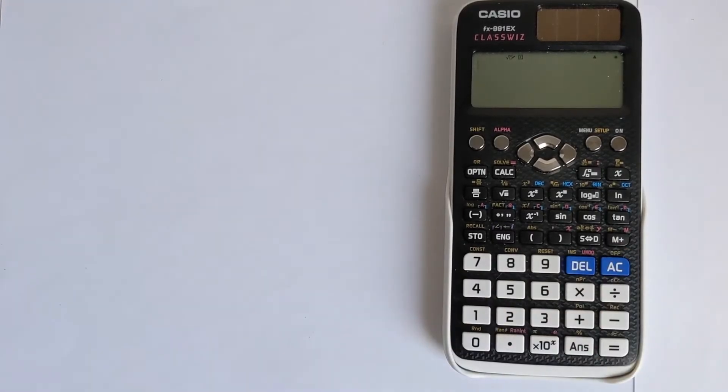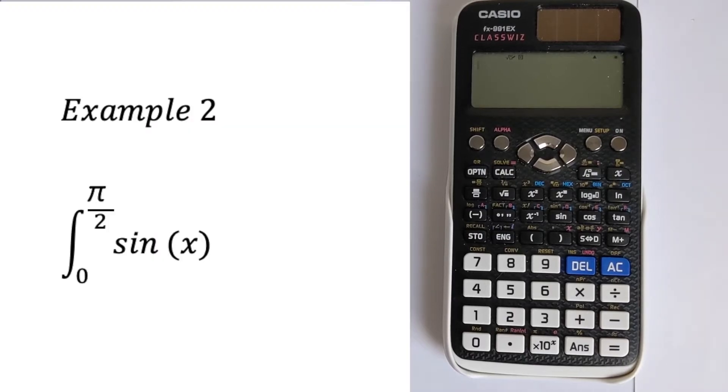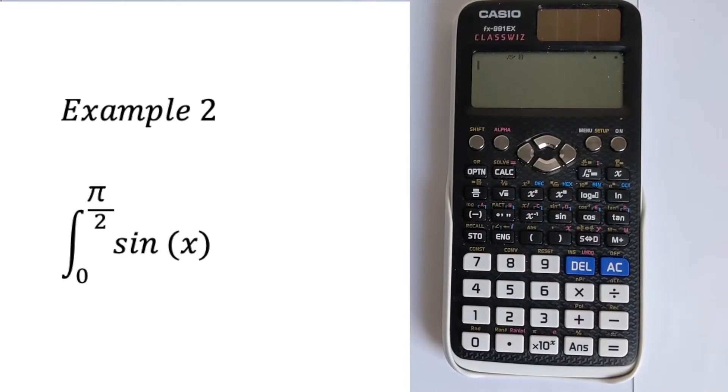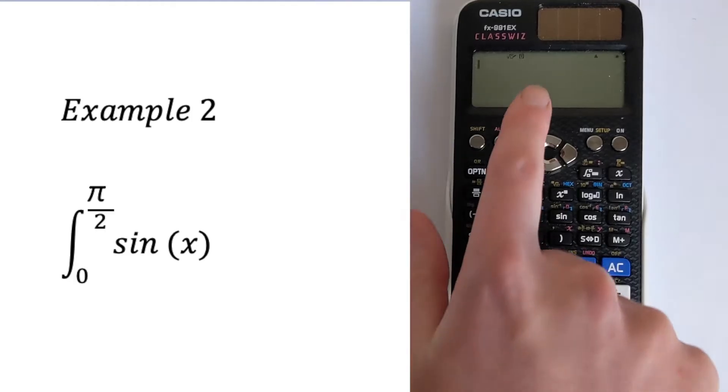For a second example we're going to look at a trig integral. And to be able to do this you have to pay a lot of attention. So we're doing the integral between zero and pi over two of sine x. And that pi over two is telling us that we're working in radians. And so we need to make sure that the calculator is in radians. So whenever you're doing trig integrals check to see if you expect degrees or radians.